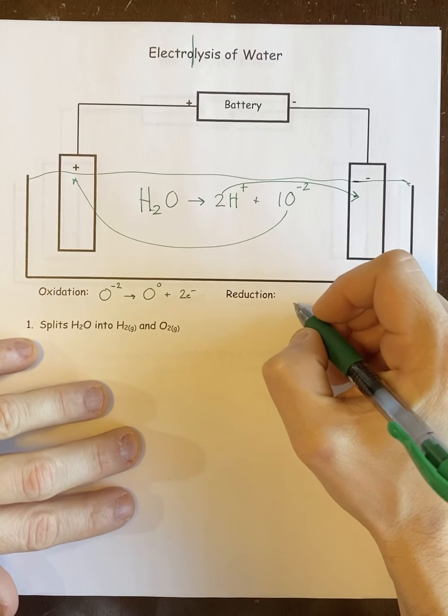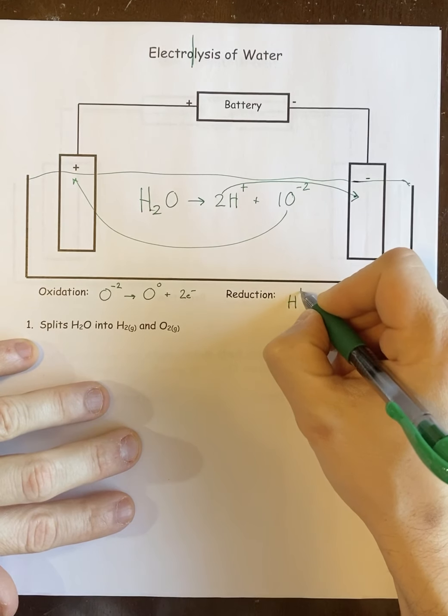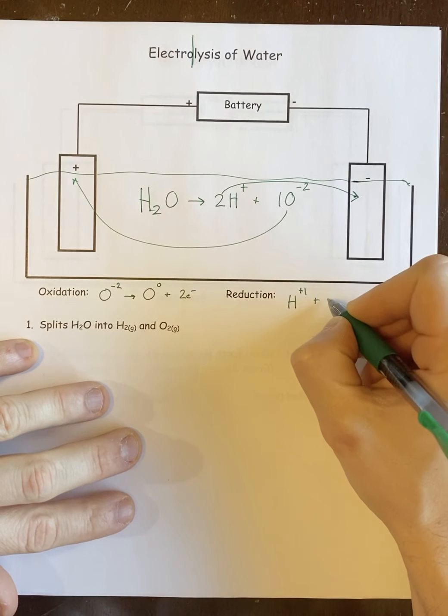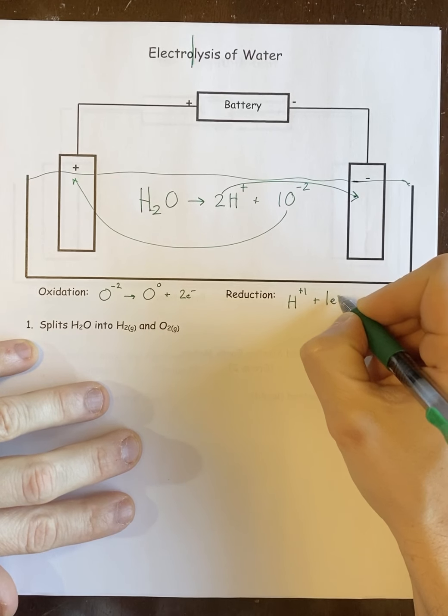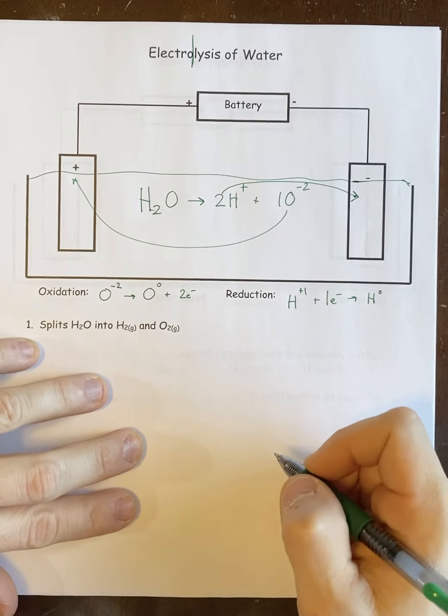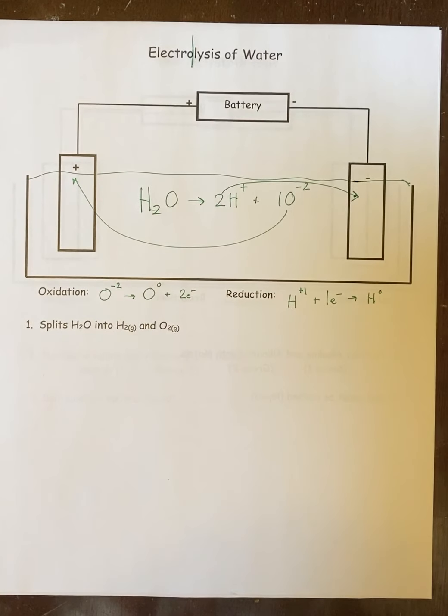And then the reverse happens here. We have H plus one. It gains an electron and turns into H zero. And then those are your two half reactions for this. They're very easy.